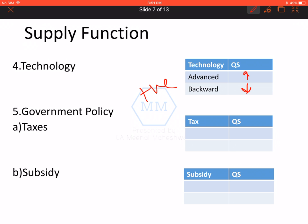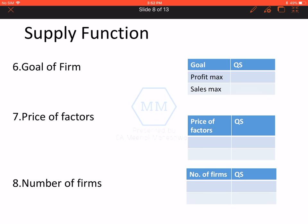Next factor is government policy. Do tarah ki government ki policy hoti hai — ek to tax ki aur doosari hoti hai subsidy ki. Agar government taxes badha deti hai, tho aise case mein quantity supplied kam ho jayega. Aur agar taxes kam kar deti hai, tho quantity supplied badh jayega. Yani ki tax ke saath negative relation hota hai quantity supplied ka. Agar subsidies, matlab kuch additional help from the side of government badh jaati hai, tho supplier apna supply badha dega. Aur wahi agar subsidy kam ho jayegi, tho supplier apna supply kam kar dega. Positive relation with subsidy.